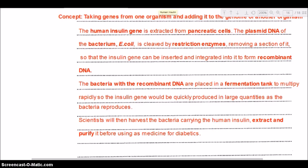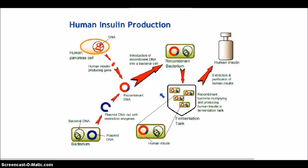A diagram is included showing the whole process of human insulin production. You can see the human pancreas cell with its DNA and the bacterium E. coli with its bacterial DNA and circular plasmid DNA. You merge the human insulin DNA with the bacterial plasmid DNA — that forms the recombinant DNA. Before that, a section is cut from the bacterial plasmid DNA using restriction enzymes before combining it with the human insulin gene.